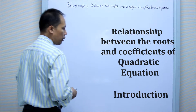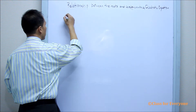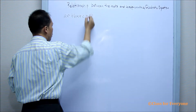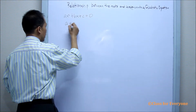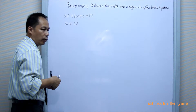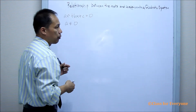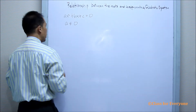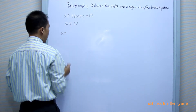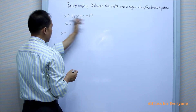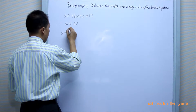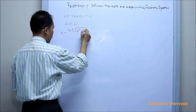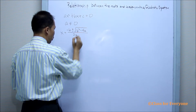Let us consider the standard form of the quadratic equation: ax squared plus bx plus c equals zero, wherein a is not equal to zero. We already know that using the quadratic formula, we can find the roots using the coefficients as negative b plus or minus the square root of b squared minus 4ac, all over 2a.